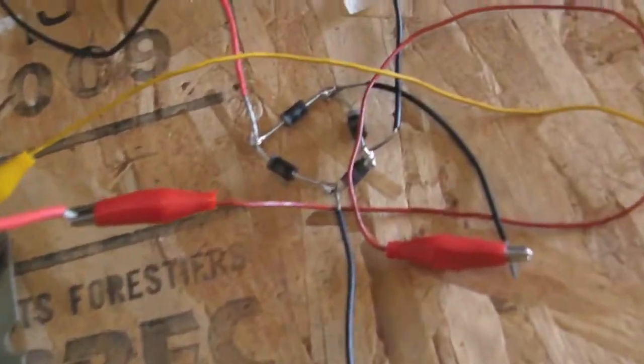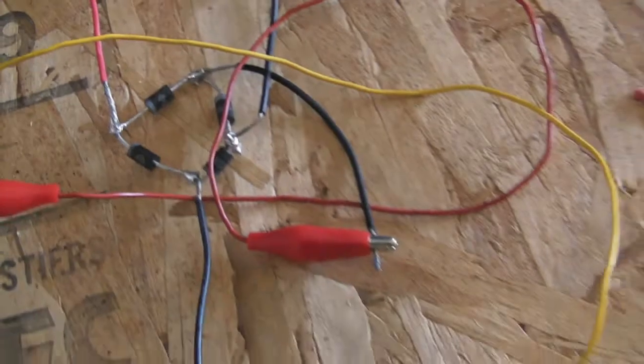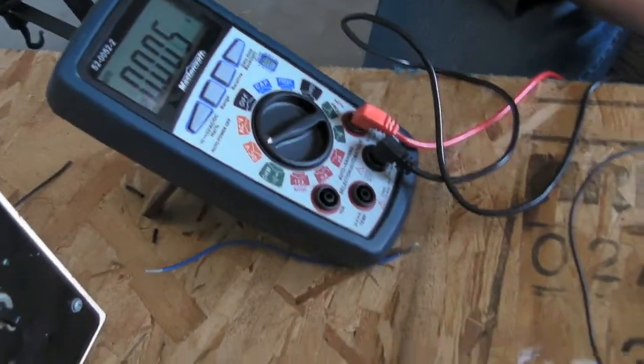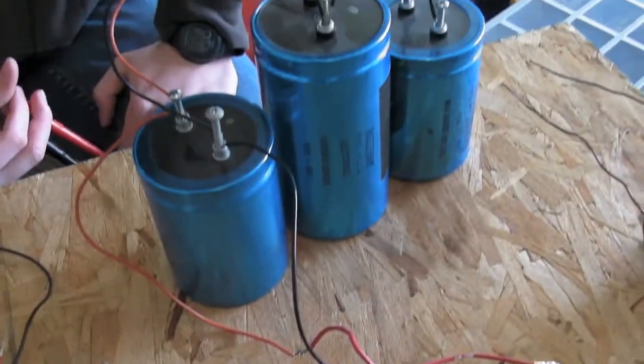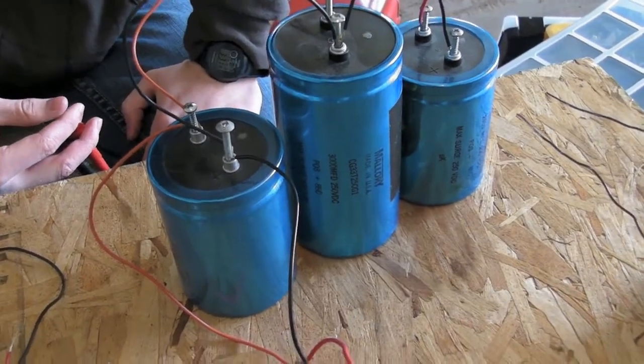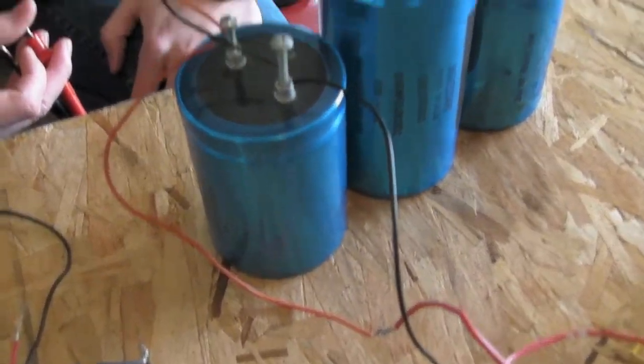And then we rectify it with this small circuit here to DC, and it's rated about 400 volts, and then we're going to charge those big capacitors over there. They're rated 250 volts, but that's alright.